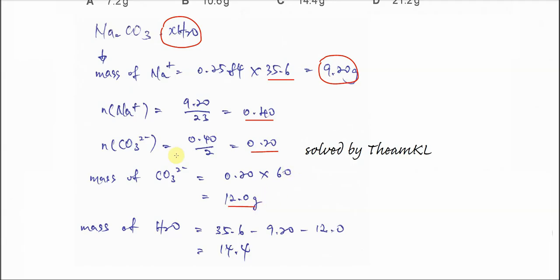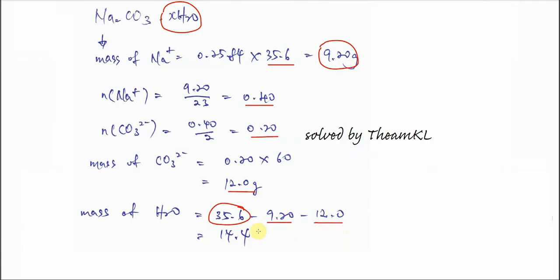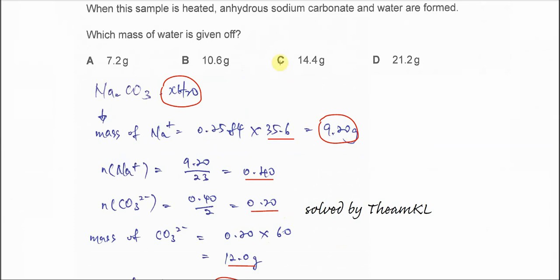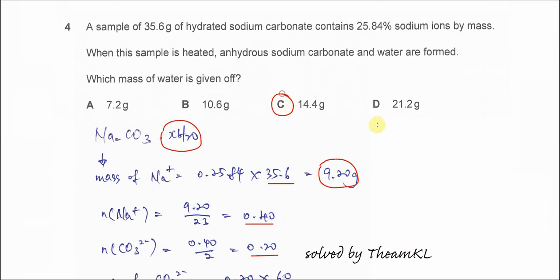So the mass of water, therefore we can calculate using the total mass minus the mass of sodium ion and the carbonate ion, which is 14.4 grams. So answer is C. That's all, thank you.